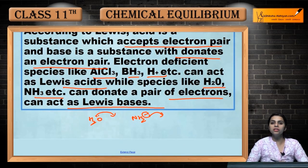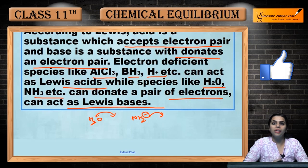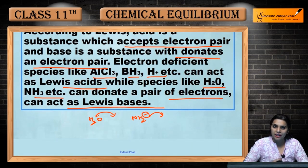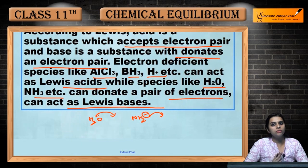So those species which are electron deficient or can accept electron pairs are Lewis acids, and those which donate electron pairs — whether they carry a negative charge or have lone pairs — will be considered as Lewis bases.